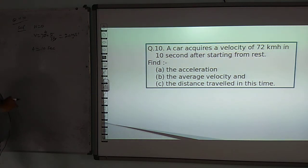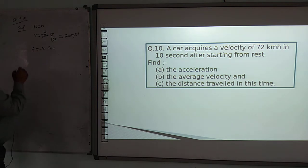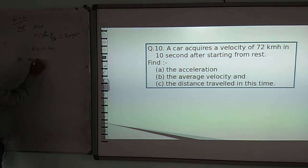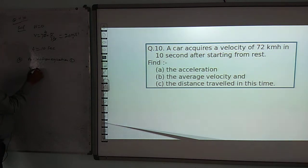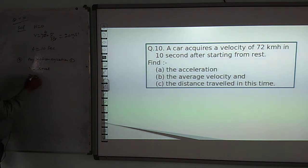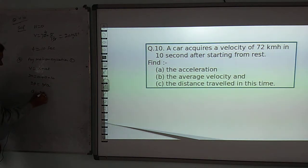For the first part, we apply the equation v = u + at. So 20 = 0 + a × 10. Therefore 20 = 10a, which gives a = 2 metres per second squared. The acceleration of the car is 2 m/s².